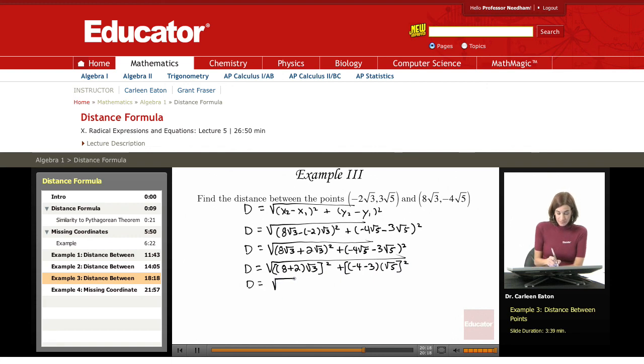Simplify this. 8 plus 2 is 10. So 10 radical 3 squared, plus negative 4 minus 7. That gives me a negative 7, radical 5 squared.